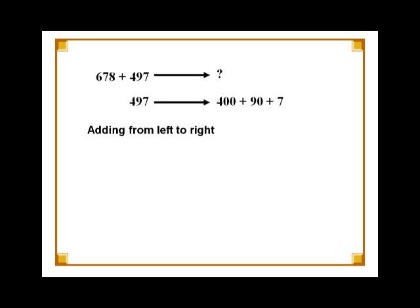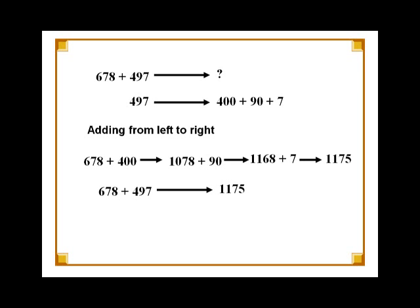Adding from left to right, 678 plus 400 equals 1078. We then add 90 to this number, which gives us 1168. Next, add 7 to it and you will get the final answer, 1175.